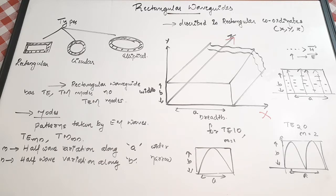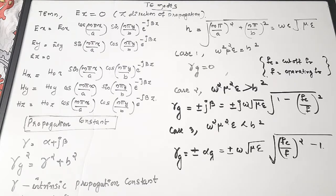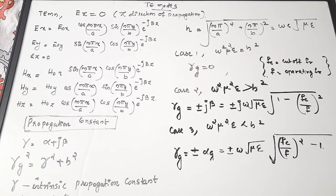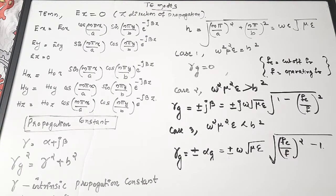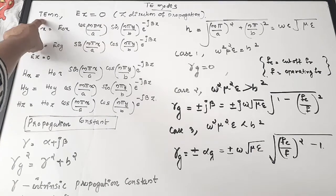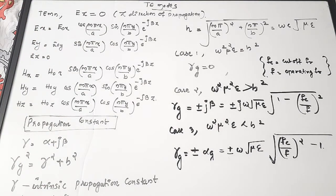Now we are going to see in detail about transverse electric field modes and transverse magnetic field modes, and the various waveguide parameters for TE and TM modes. For TE mode, the field equations in x, y, and z directions are given. If z is the direction of propagation, then for TE mode the electric field in the z direction is equal to zero — that is the defining condition of the transverse electric mode.